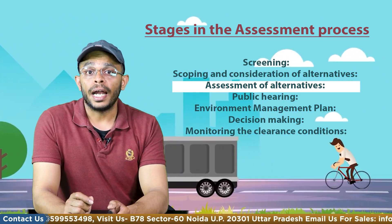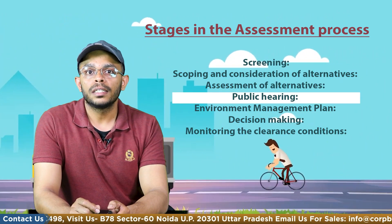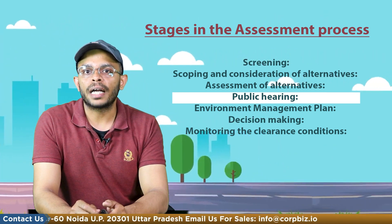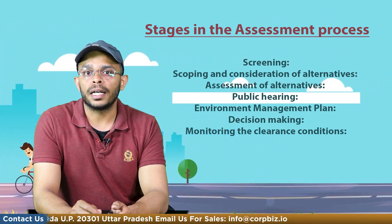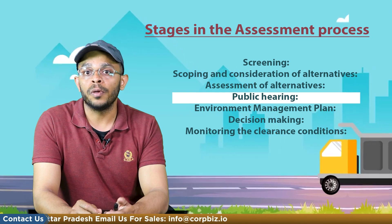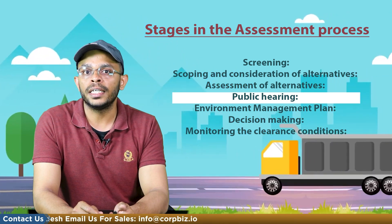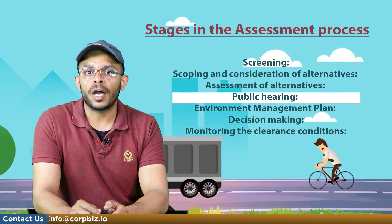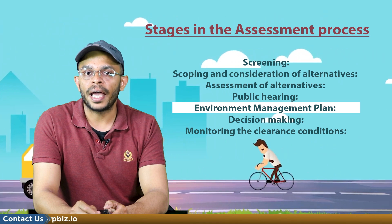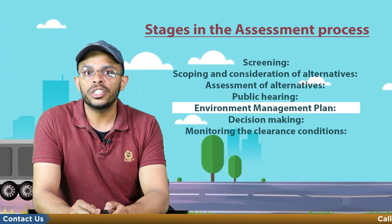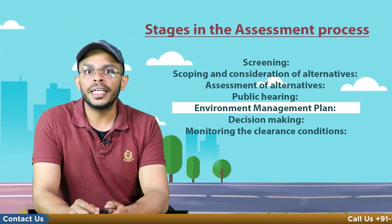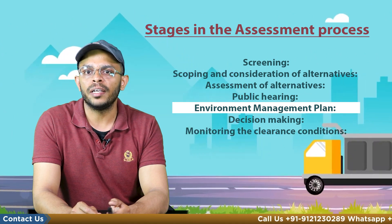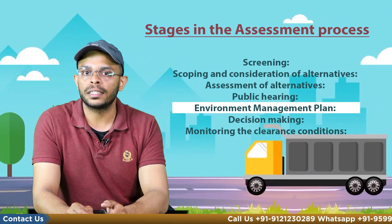Next is public hearing, where the concerns of the locals regarding the adverse impacts of the project are ascertained and taken into account before the final EIA report preparation. Next is the environment management plan, where the delineation of mitigation and compensation measures for all identified impacts are ascertained.